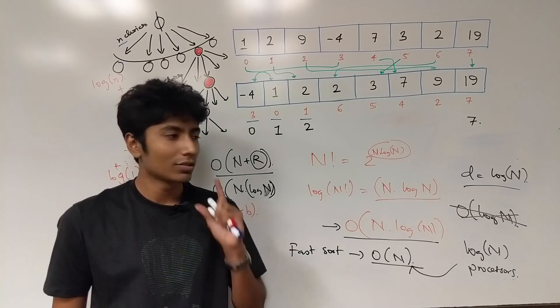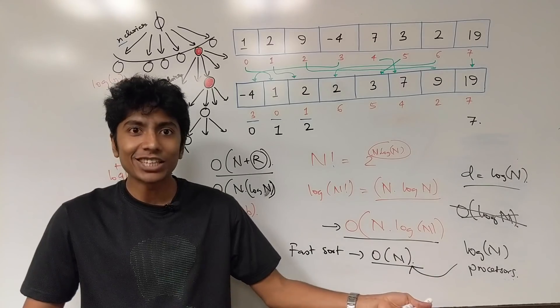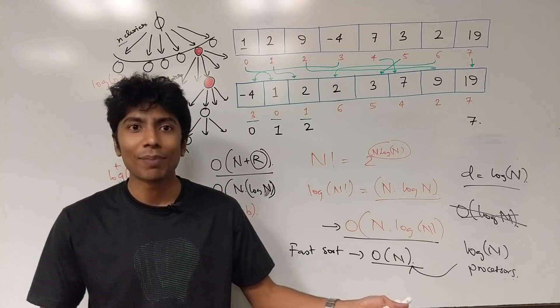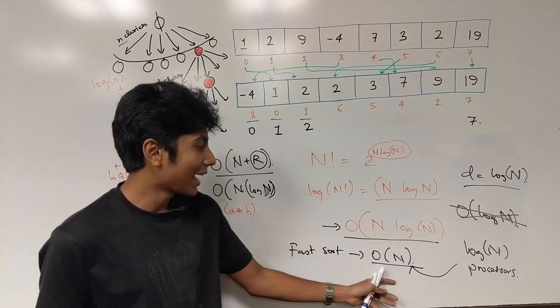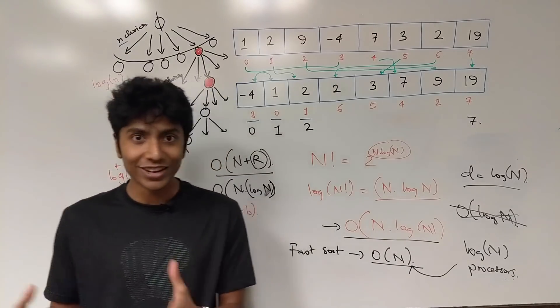In a single processor, fastest algorithm, n log n. Use multiple processors. It's like cheating. But yeah, parallel sorting is a thing. And that would be order n time. So that's how you can make sorting really, really fast.